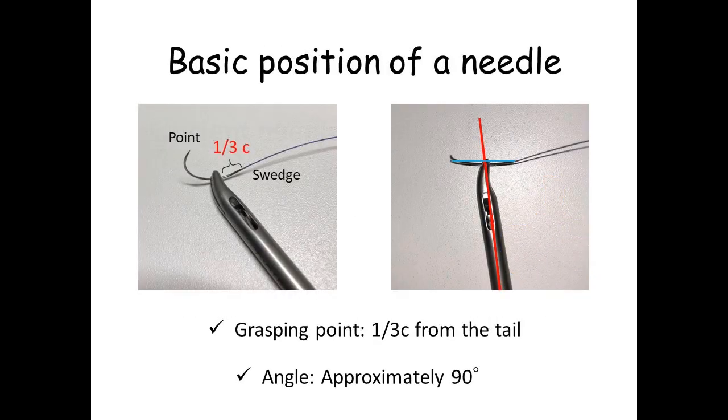This is the basic position of a needle. Grasping point is one-third circle from the tail and the angle should be approximately 90 degrees.